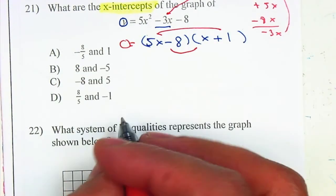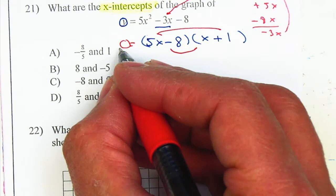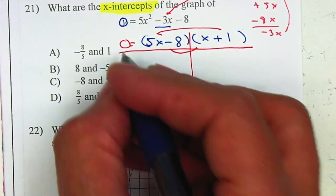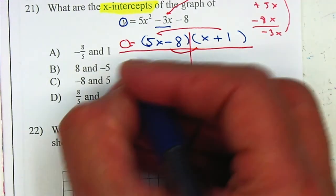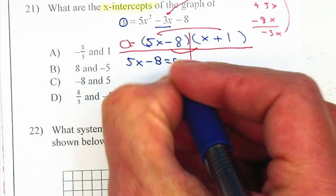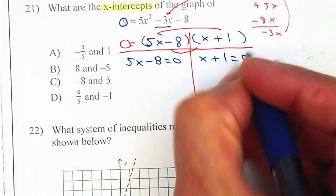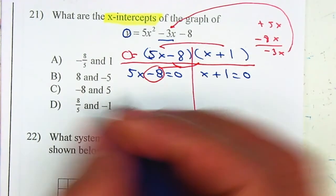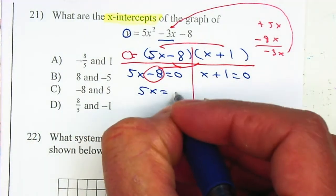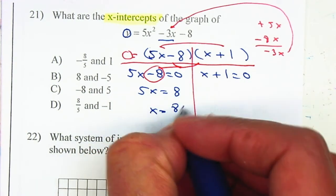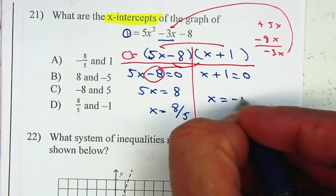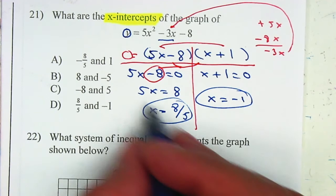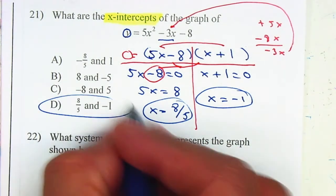From here, it's equal to 0. Because I'm multiplying and it equals 0, I can use the zero product property. That tells me 5x minus 8 equals 0 and x plus 1 equals 0. Move the 8 to the right and divide by 5, giving x equal to 8 over 5. Move the 1 to the right, it becomes negative 1. So your answer is letter D.